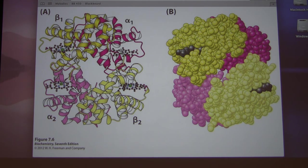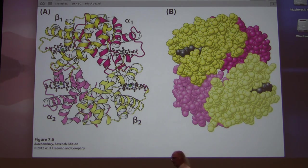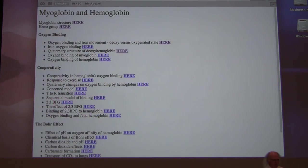That phenomenon is called cooperativity. Cooperativity occurs when the binding of one molecule by a protein favors the additional binding of the same molecules by the same protein. Loading of one oxygen changed hemoglobin from the T state to the R state, and in the R state it grabs all it can get.